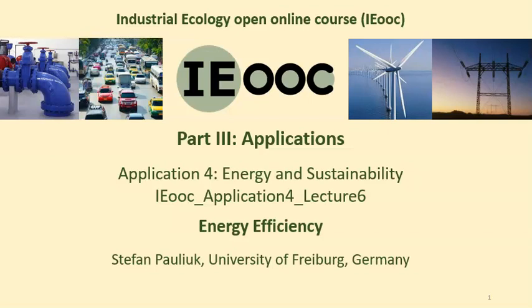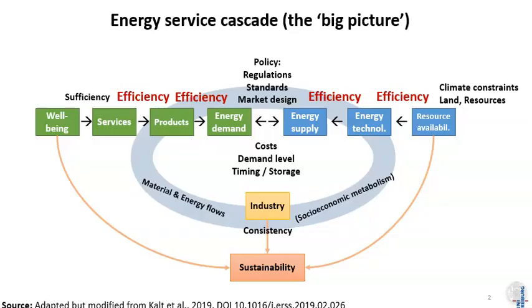Welcome to the lecture on energy efficiency. In the big picture, we go all the way from natural resources on the right to human well-being on the left, looking at all the different conversion steps from resources to available energy carriers, from available energy carriers to useful energy carriers, then to energy demand by the products, then the services generated by the products and their contribution to human well-being. There are four steps here to decouple one process output from the next, which we label efficiency.